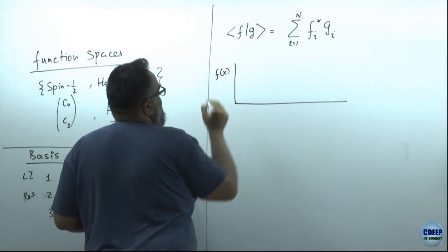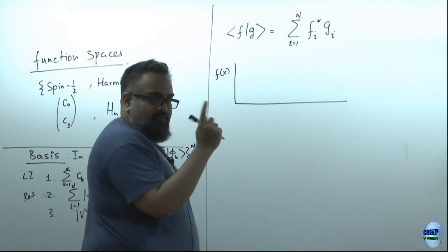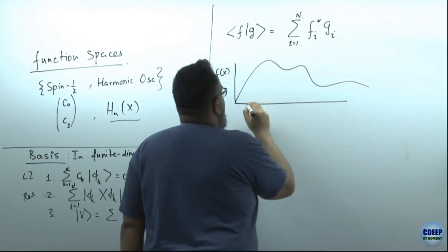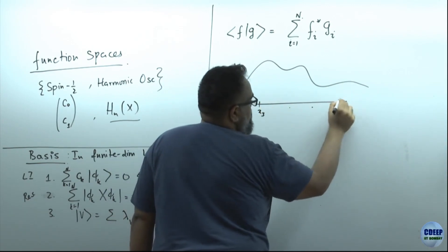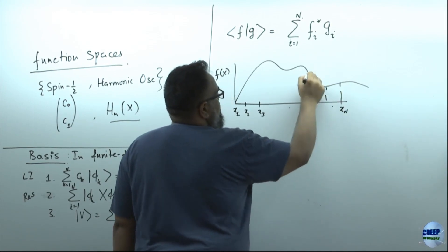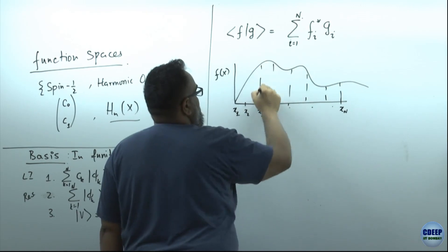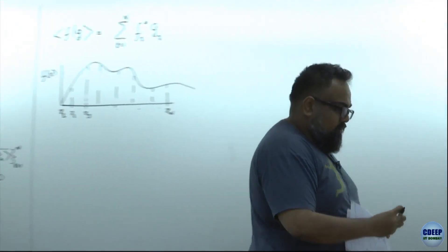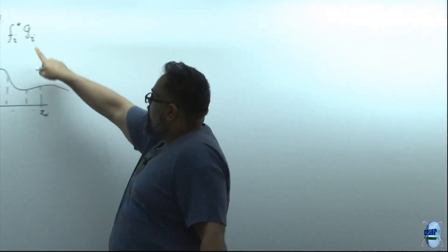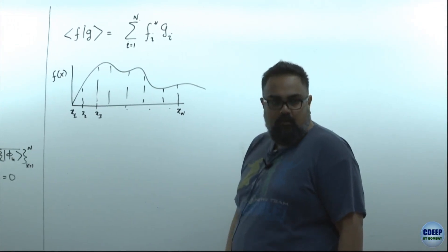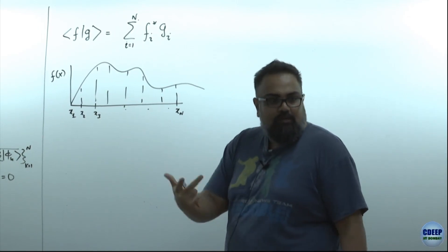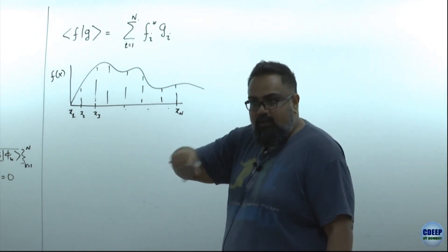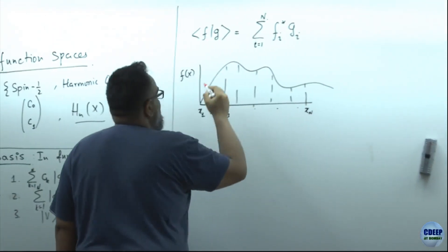Maybe I have a function f(x) and I'm interested in sampling f(x) at some set of points. I sample it at discrete points x1, x2, x3 up to x_n. Now I want to compare this f to another function g. The star is needed because we want the inner product of f with f to be a real number so we can associate it with probabilities.